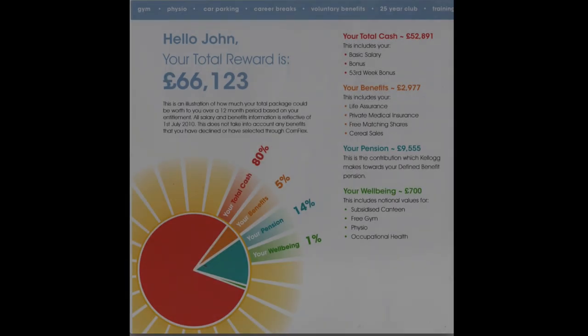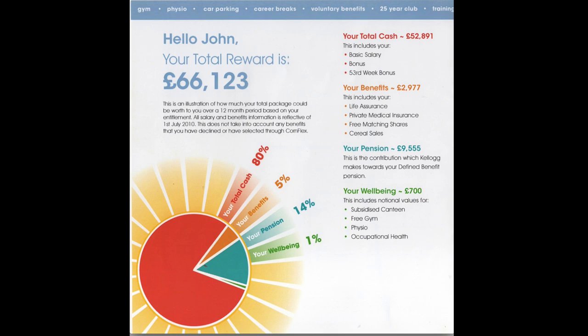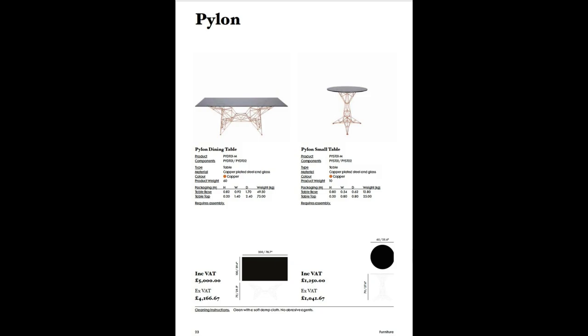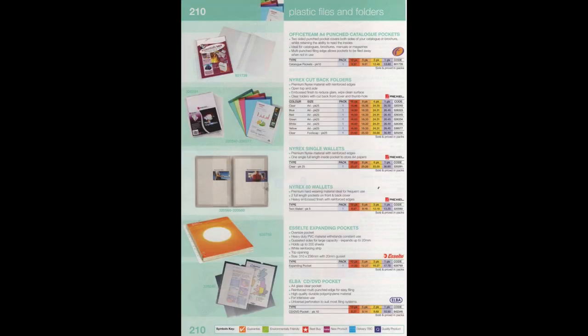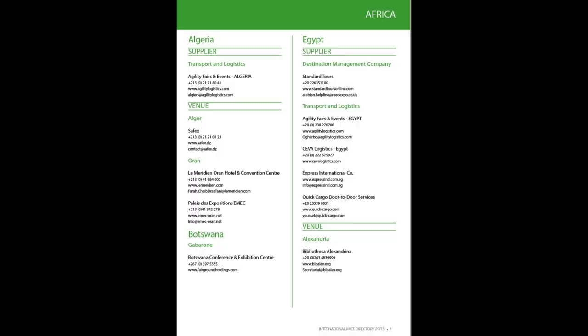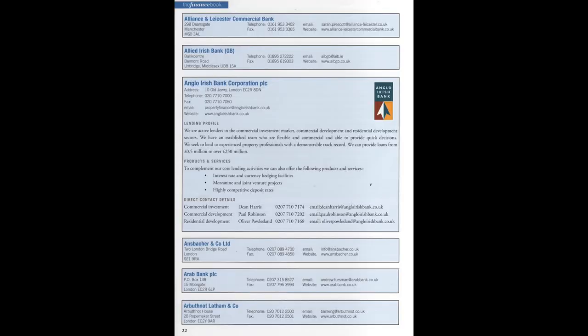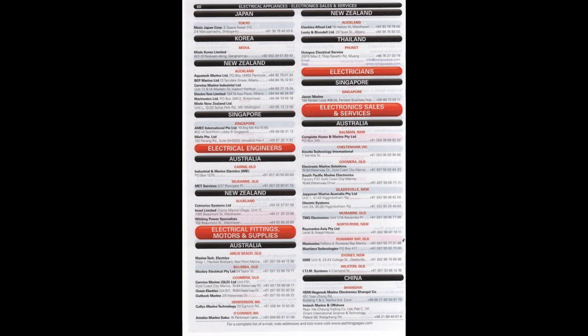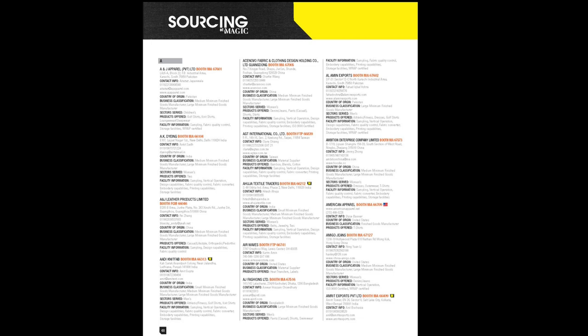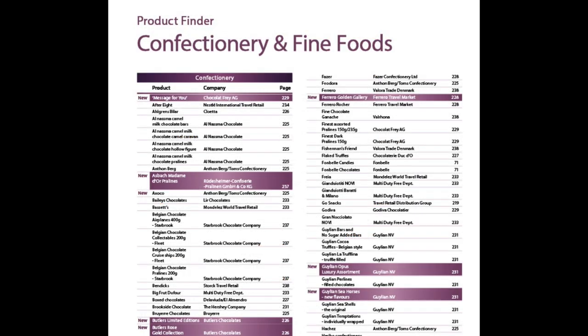You want to turn that into a fabulous publication — maybe like this employee benefits brochure, or perhaps like this catalogue, or this one, or one of these. How about a product feature comparison chart, or a classified ad section? How about a directory like this one, perhaps, or this one, or one of these?